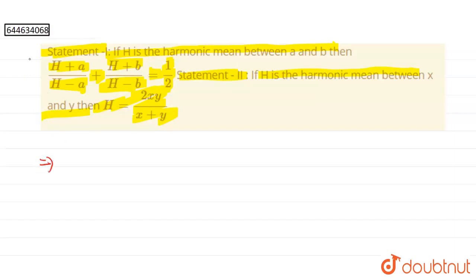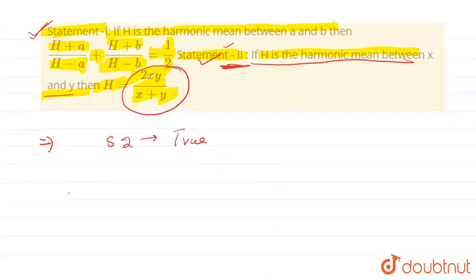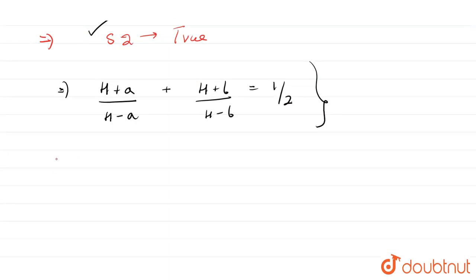In this type of question, we are given Statement 1 and Statement 2. If Statement 2 is correct — which is correct, that the harmonic mean between any two numbers is 2xy/(x+y) — then we suppose Statement 2 is true and put it into Statement 1 to verify. So h = 2ab/(a+b).